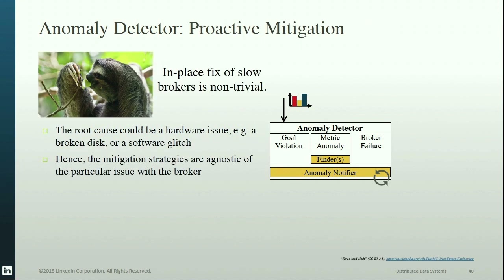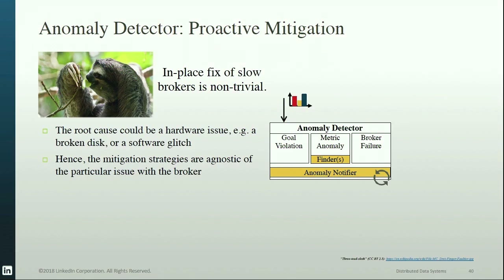Proactive mitigation also comes with challenges. The root cause of a detected anomaly is non-trivial to identify — it could be a hardware issue, a software glitch, or even a traffic shift. That's why the mitigation strategy for self-healing is agnostic of the particular root cause, providing a first line of defense to enable high availability and good performance. Finding the actual root cause still requires human intervention.